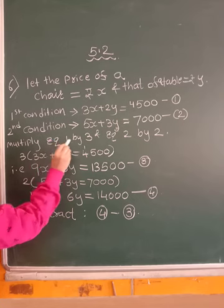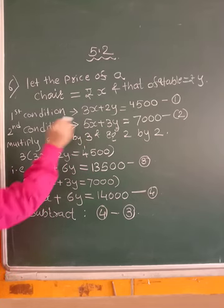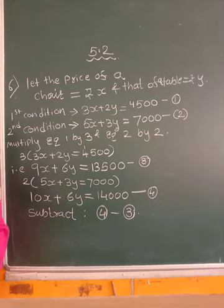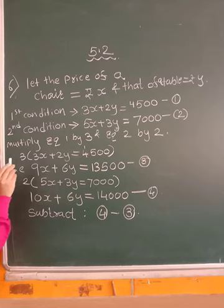Multiply equation 1 by 3. Why are we doing this? We want to solve these simultaneous equations. So first thing is, you have to equalize the coefficients. So let's equalize the coefficients.